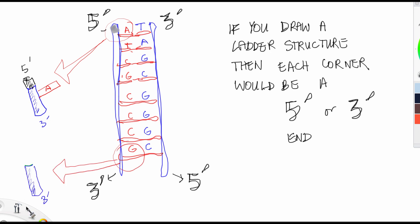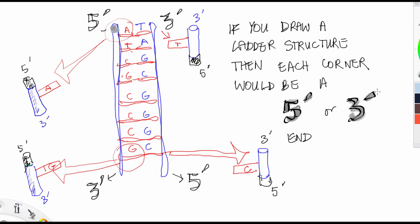You can see that the 5' end has the phosphate sticking up, and the 3' end has the sugar.